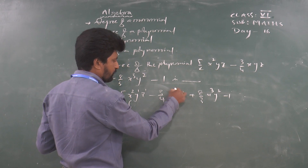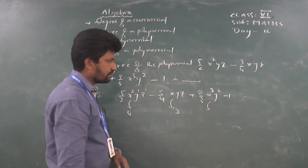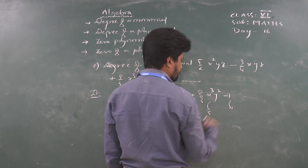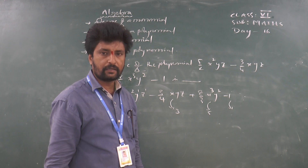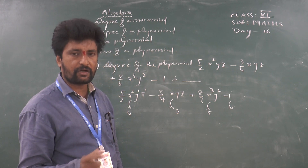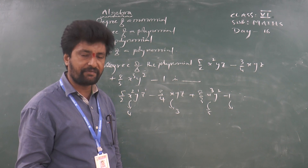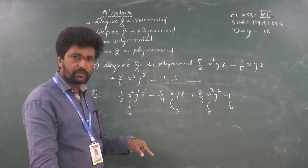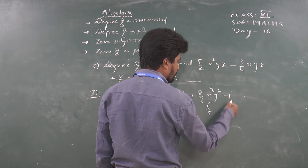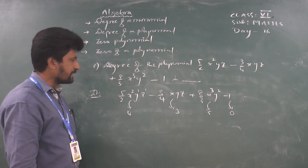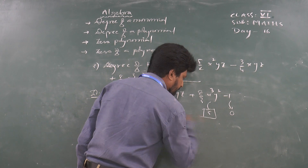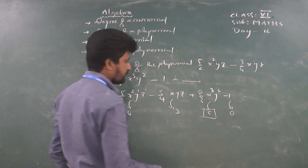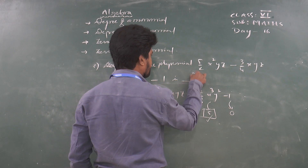For the third term x cubed y squared, the indices are 3 and 2, so degree is 3 plus 2 equals 5. For the constant term minus 1 — it is a non-zero constant, so its degree is 0. Note: degree of a non-zero constant is 0, and degree of 0 is not defined. Among all the degrees — 4, 3, 5, 0 — the highest is 5. Therefore the degree of this polynomial is 5.